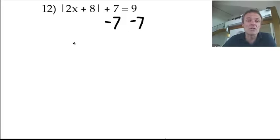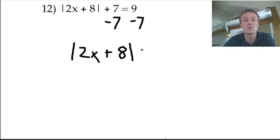So if I take away 7 from both sides, I have 2x plus 8 still inside the absolute value. So that's the absolute part we've got on the left-hand side, and that now equals 2.